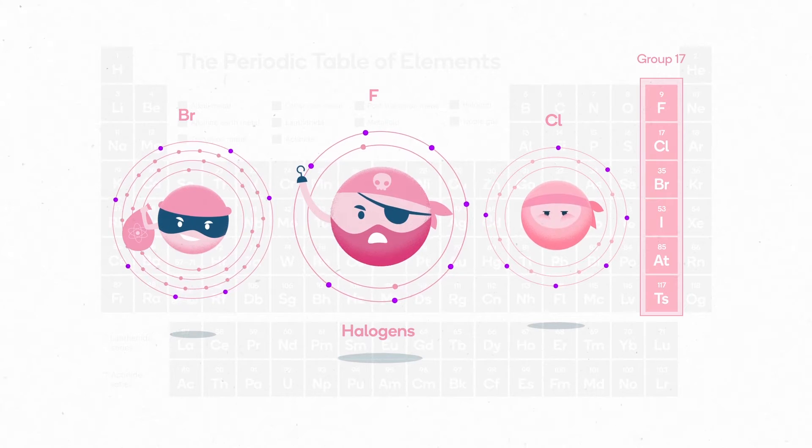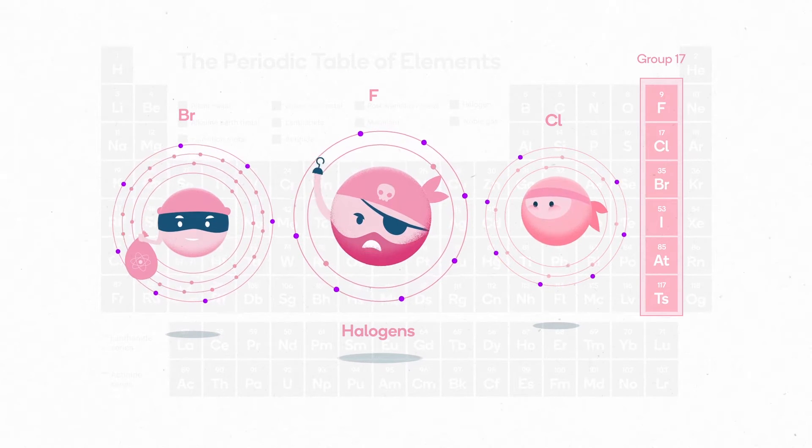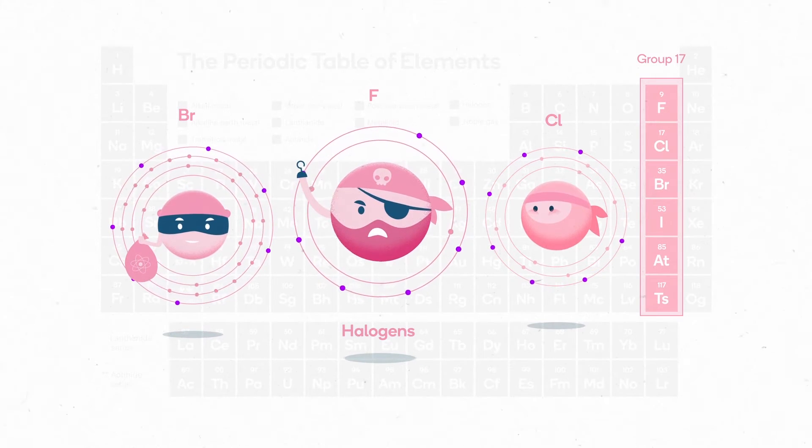You could say they're like a bunch of thieves who steal to get what they want. On the right hand side of the periodic table, smaller atoms are more reactive.